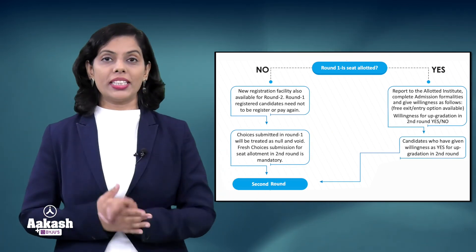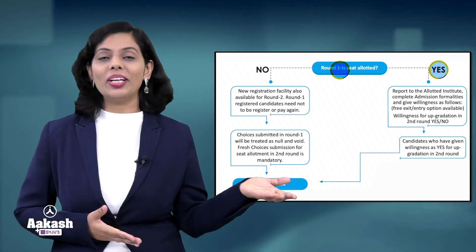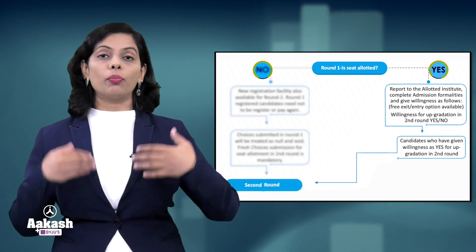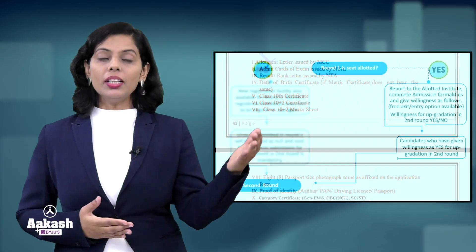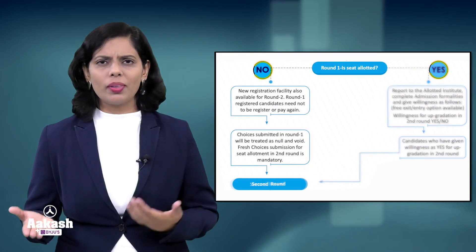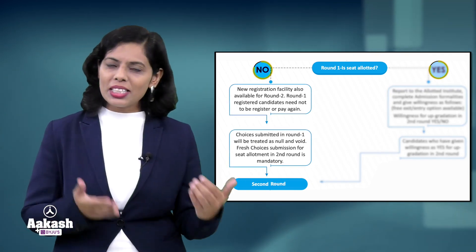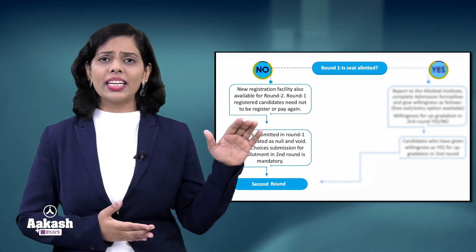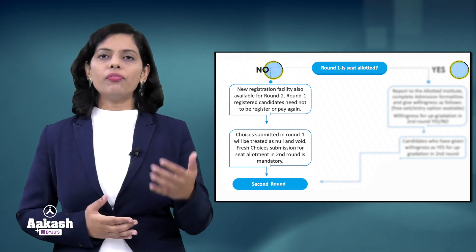If in Round 1 you are getting a college, you have two choices: either you are willing to join that college or you are not. If you are willing to join, you have to report to the college and submit your original documents. You are also eligible for updation in Round 2. If you are not willing to join that college, you are still eligible for Round 2 — you don't need to register again, as you have already registered for Round 1.